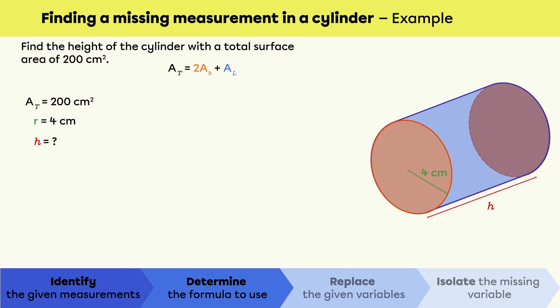The total surface area equals 2 times the area of the base plus the lateral area. Since the base of a cylinder is a circle, we can replace AB with pi r squared. Also, since the lateral area is equal to the circumference of the circle multiplied by the height of the cylinder, we can replace AL with 2 pi rh.